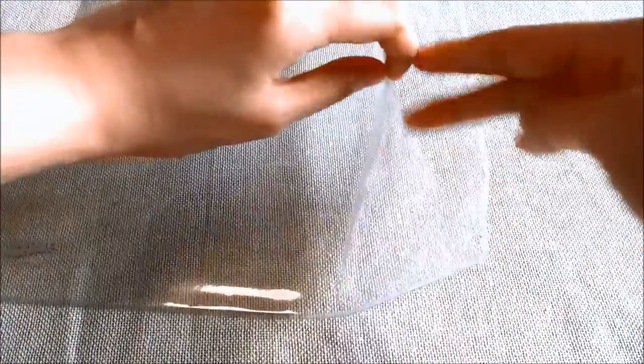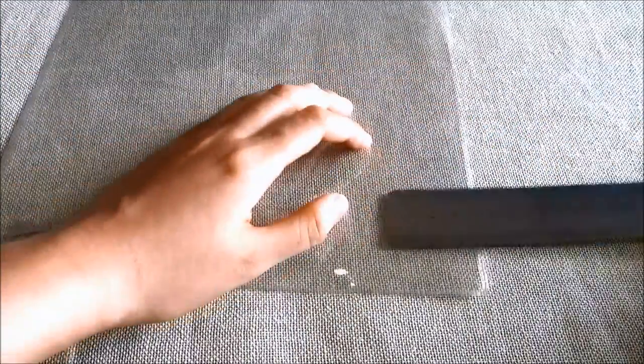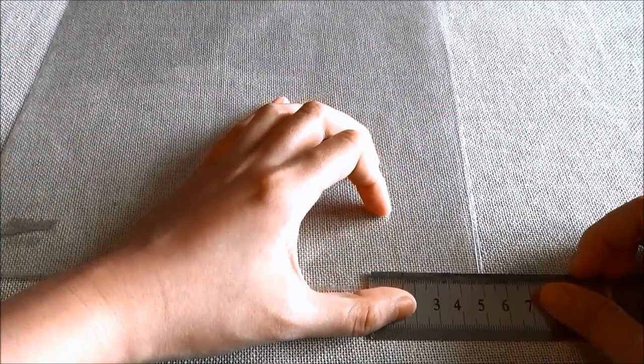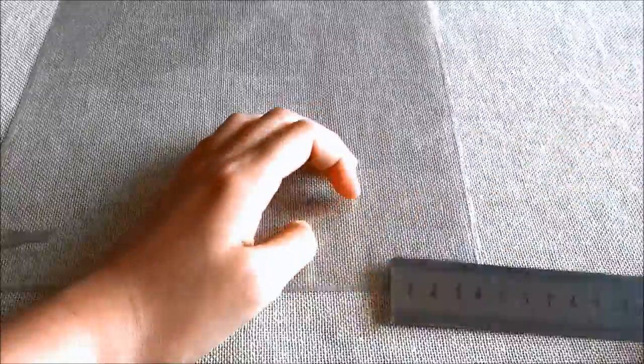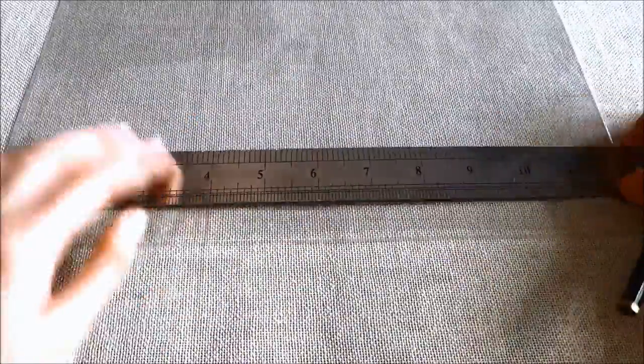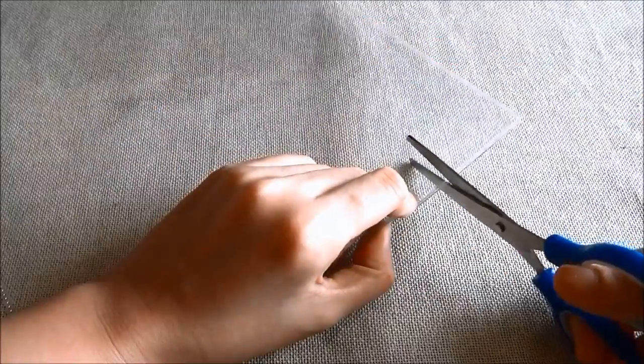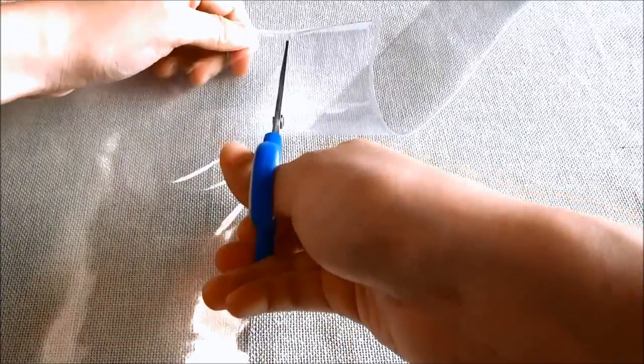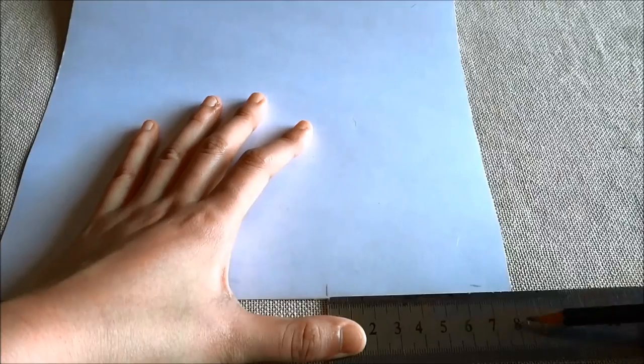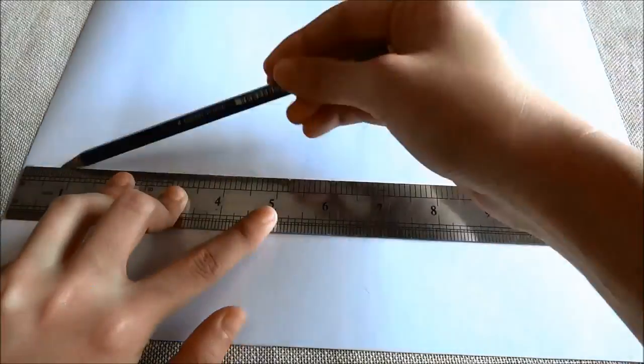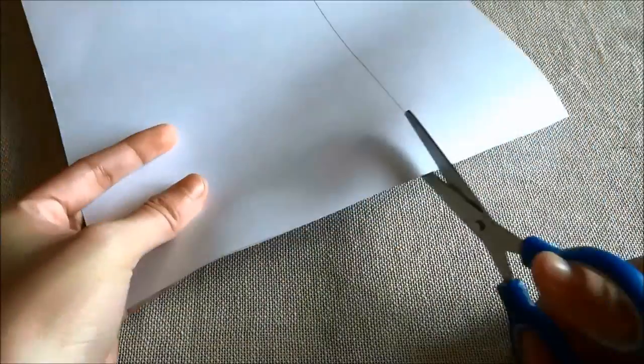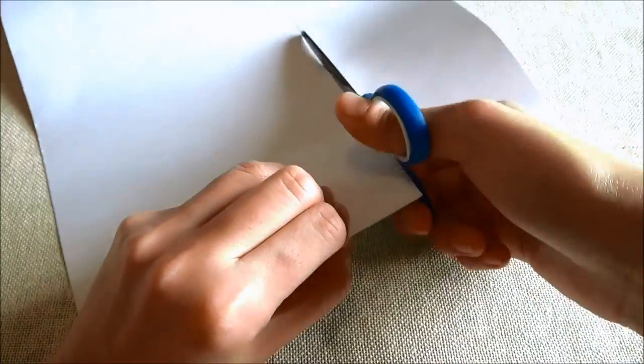First, on the opening side of your transparent folder, measure up 5 cm and cut it out with your scissors. Next, measure up 8 cm on your paper and cut it out as well. Try it out in your transparent folder. Feel free to adjust the measurements to your liking.